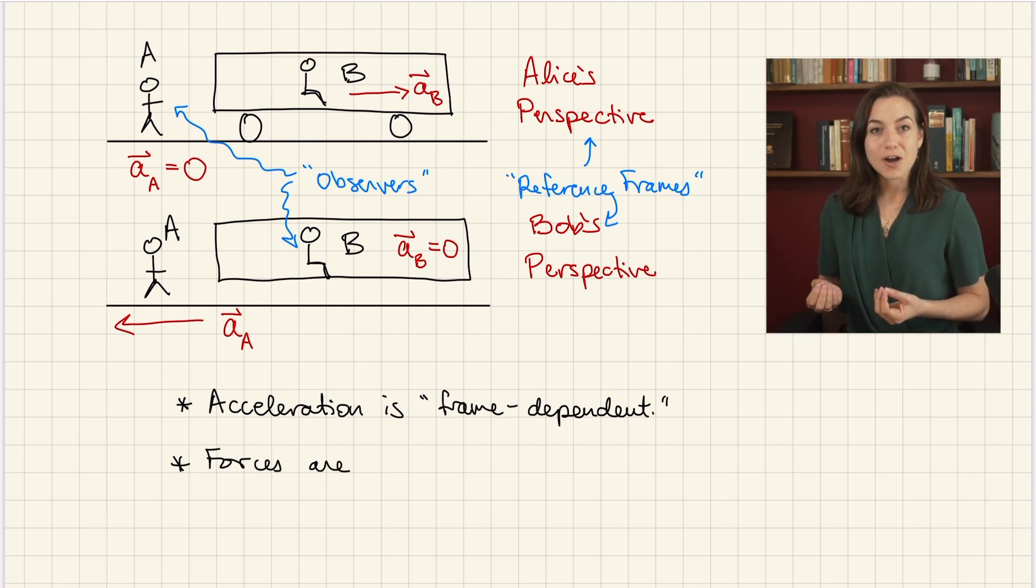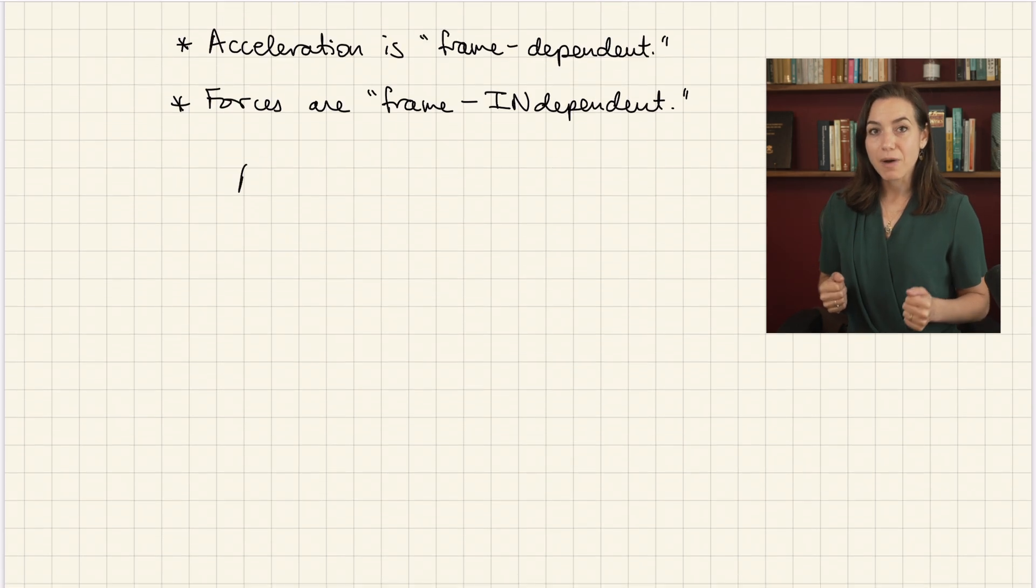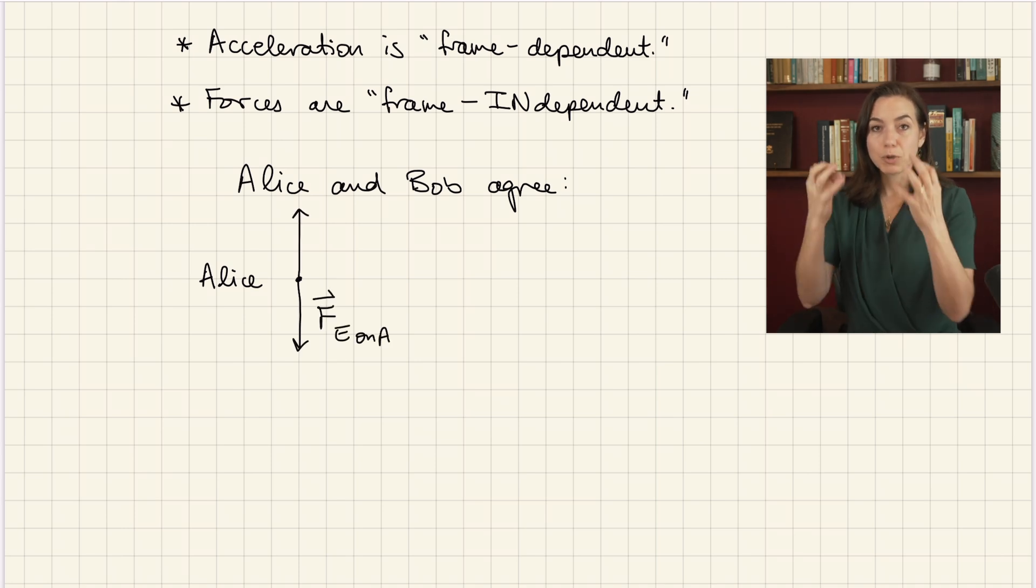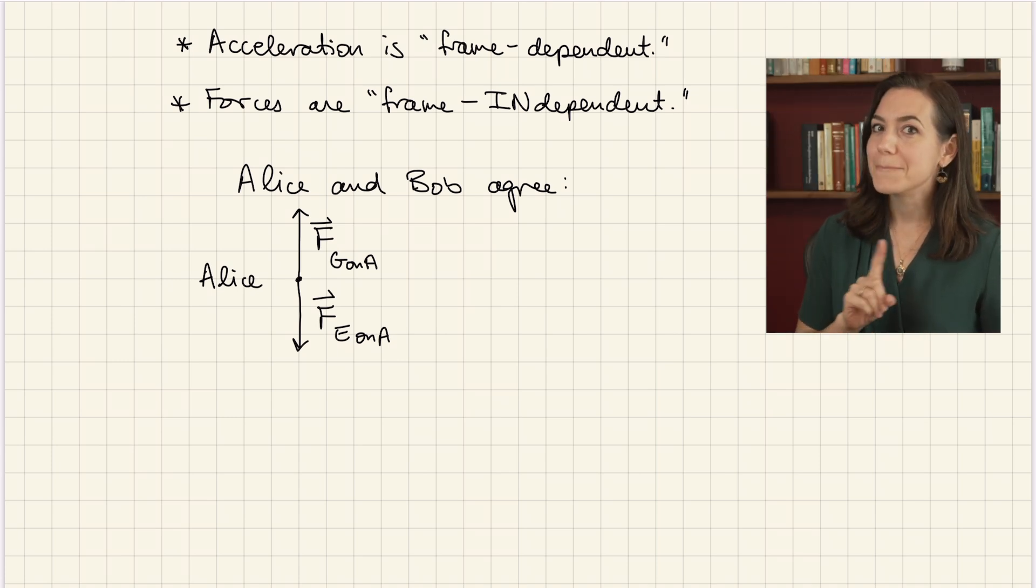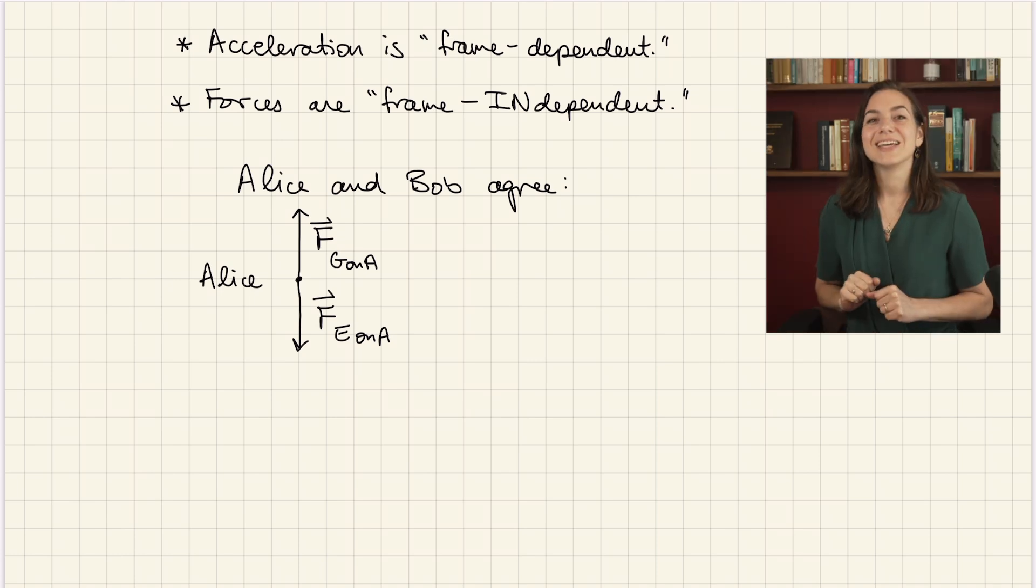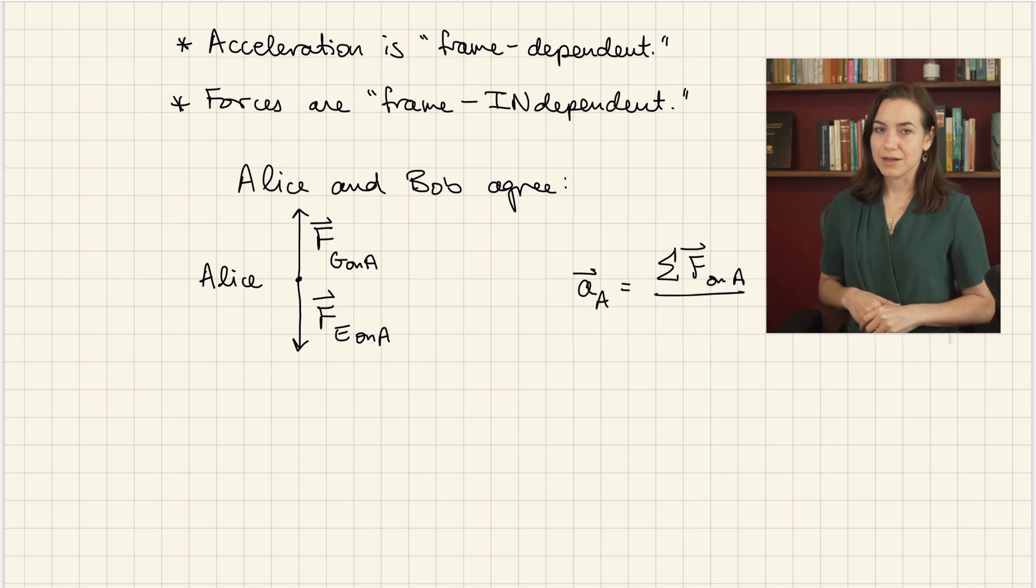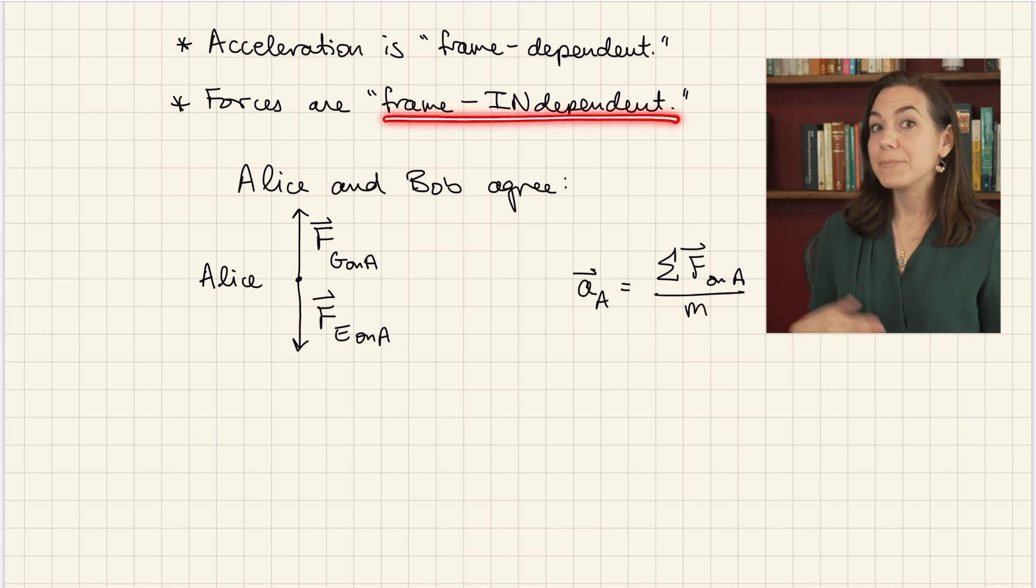Forces, on the other hand, are frame-independent. Both Alice and Bob will agree that there are only two objects exerting forces on Alice. Earth is pulling her straight down, and the ground is pushing her straight up, with an equal and opposite force, but not because of Newton's third law. In particular, they both agree that she is not experiencing any horizontal force, that there is no object pushing or pulling her in the horizontal direction. So now, hopefully you can see the problem with Newton's second law. If forces are frame-independent, but acceleration is frame-dependent, then clearly this equation cannot hold in all reference frames. There must be some good frames where it works, and some bad frames where it doesn't work.